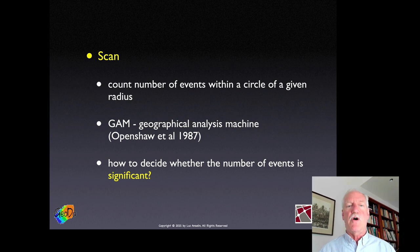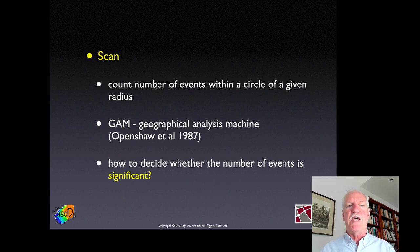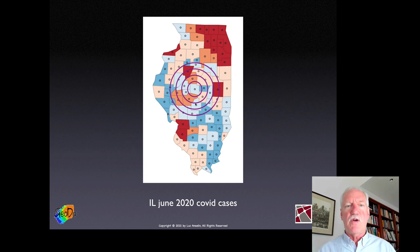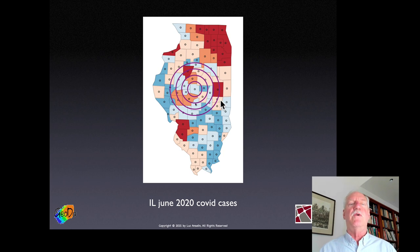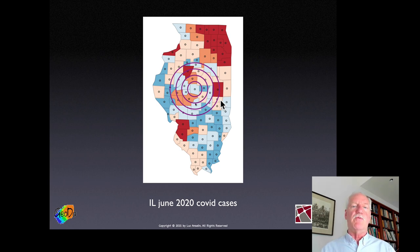With the Openshaw GAM approach, you had circles with varying intensity but no formal way to decide which was significant. A scan statistic works like a bullseye: you focus it on the centroid of an areal unit, increase the radius of the circle, count how many events fall within that shape, and continue until you reach a stopping criterion. The two different approaches use different stopping criteria.